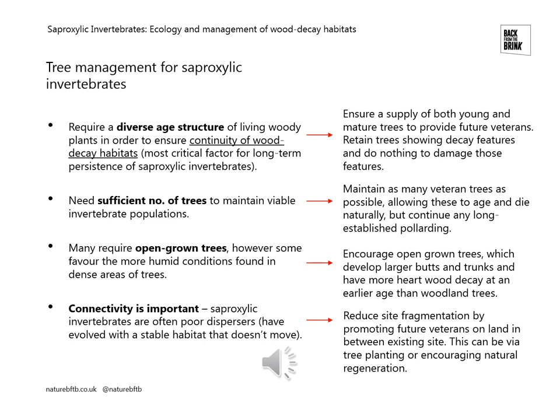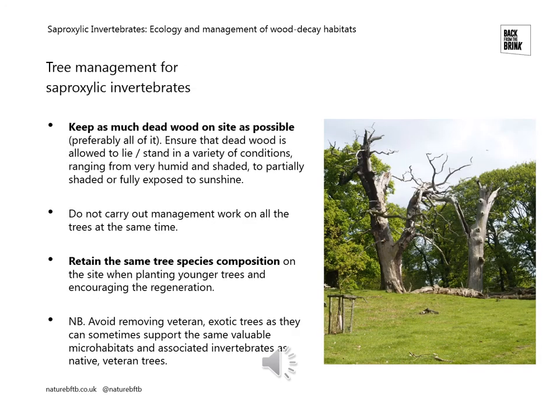What can we do on sites to make them more valuable for saproxylic invertebrates? We need to ensure a supply of both young and mature trees to provide future veterans. We need to retain trees showing decay features and do nothing to damage them. We need to maintain as many veteran trees as possible and allow them to age and die naturally. We need to encourage open-grown trees, which develop larger butts and trunks and have more heartwood decay at an earlier age. We also need to reduce site fragmentation by promoting trees that will become future veterans on lands between existing sites, through tree planting or encouraging natural regeneration.